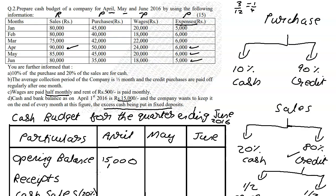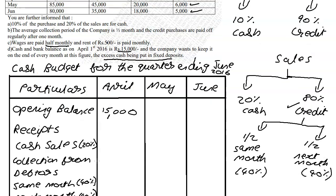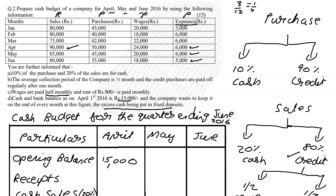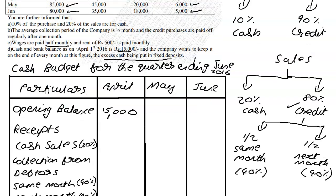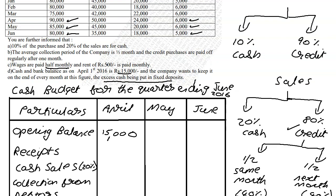Starting with receipts: cash sales is 20% of the same month's sales. So 20% of 90,000 gives 18,000 for April; 20% of 85,000 gives 17,000 for May; 20% of 80,000 gives 16,000 for June.